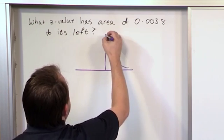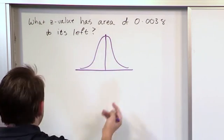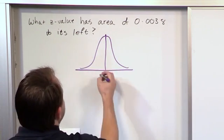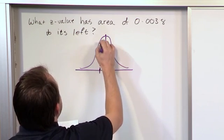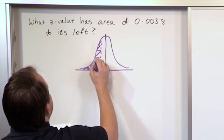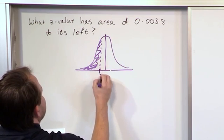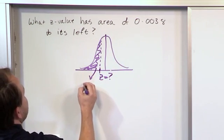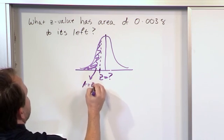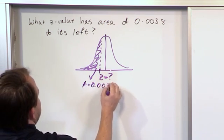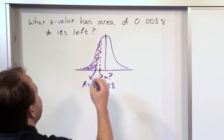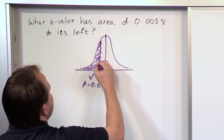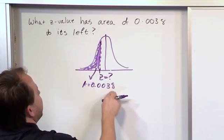So if you think about it, here's a probability distribution. What we're saying is that there's some value of Z here. I don't know exactly where it is, but there's an area out there that to its left, of whatever Z value this is, the area is 0.0038. Basically we're going backwards. So the area here, the shaded area here, is 0.0038.